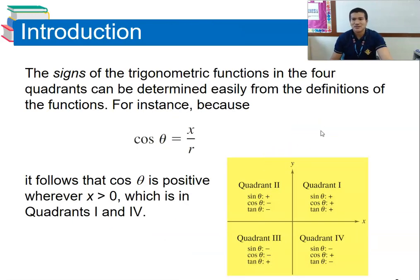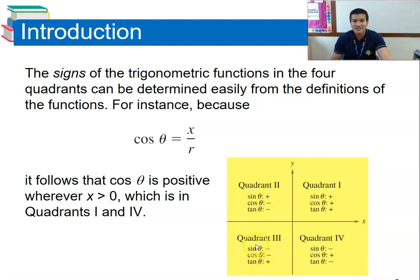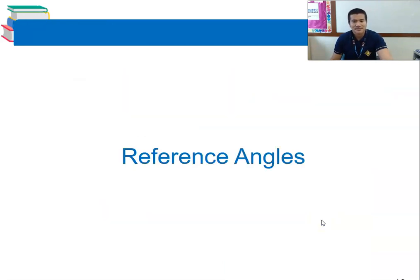Reviewing the signs of trig functions by quadrant: In quadrant one, everything is positive — sine, cosine, and tangent. In quadrant two, sine is positive but cosine is negative, so tangent becomes negative. In quadrant three, both sine and cosine are negative, but dividing them gives a positive tangent. In quadrant four, sine is negative and cosine is positive, so tangent is negative.